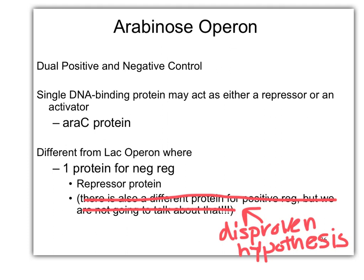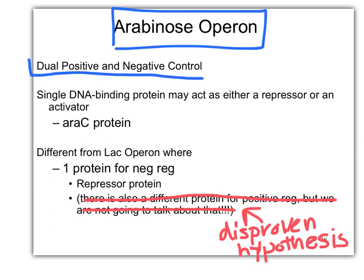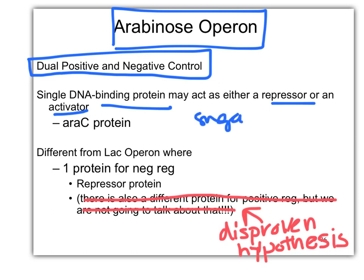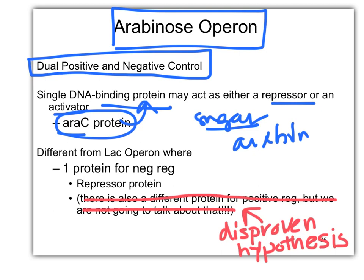Hello, a super fast lecture capture. The arabinose operon has dual positive and negative control. A single DNA binding protein can act as either a repressor or an activator depending on the expression of arabinose, the sugar, or the inducer. The ARAC protein is the DNA binding protein. The sugar, arabinose, is the one that determines whether it's a repressor or an activator.